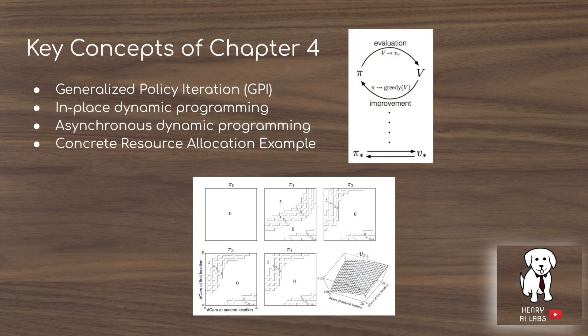Although Chapter 4 is titled Dynamic Programming, the key takeaway is generalized policy iteration. Compared to Chapter 3 where we use Bellman optimality equations to derive a system of equations to solve for the optimal value functions, generalized policy iteration is a technique of iteratively approximating and getting closer and closer to the optimal value functions. This is much more computationally tractable, especially when you have large state spaces.